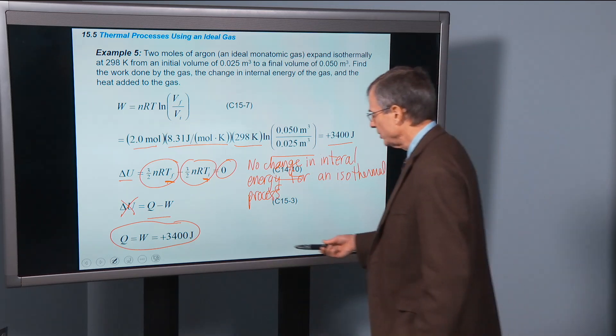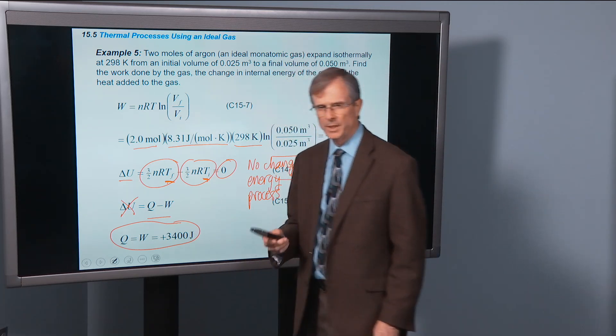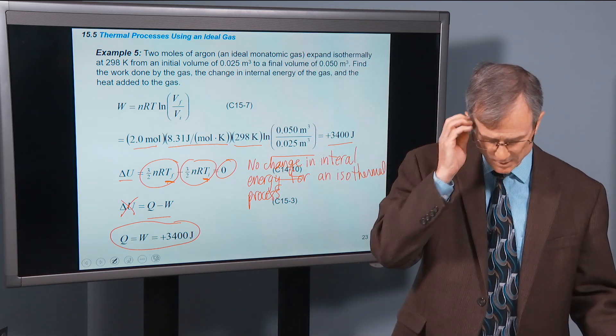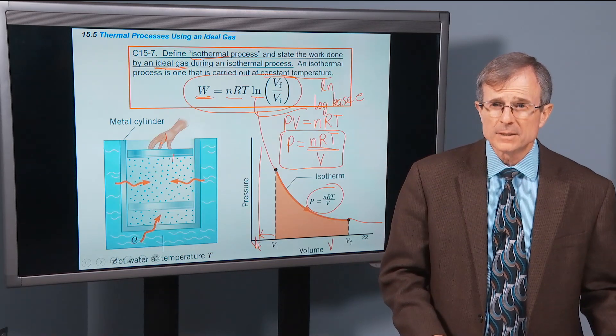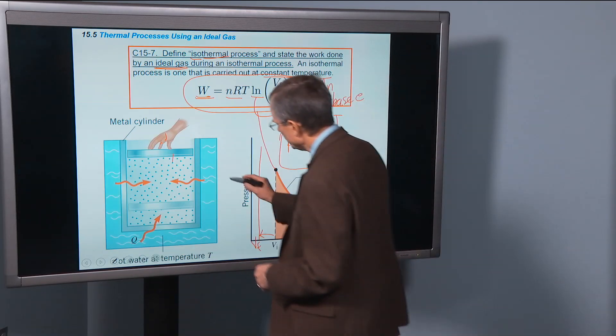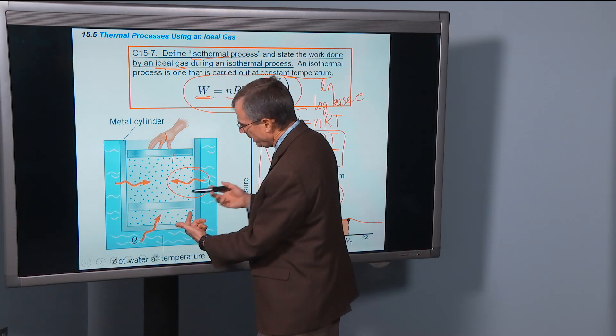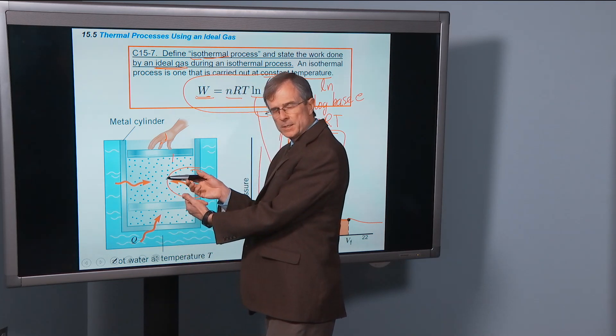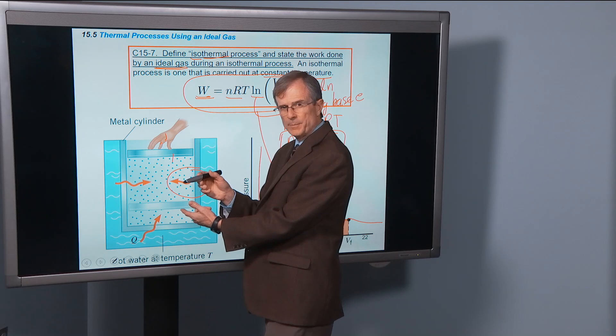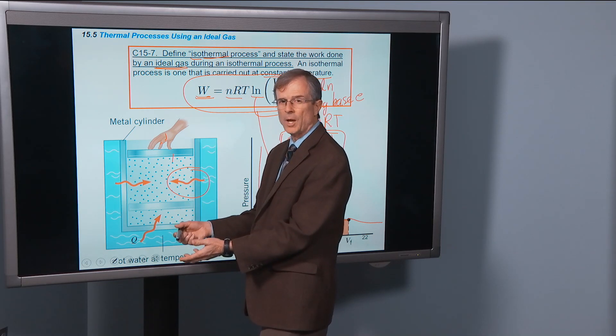And this is the amount of heat that you had to add in order to keep that temperature the same. And so that goes back to this thing here. These red squiggly arrows indicate the heat that's being added to the system, in order to keep the temperature the same, and not let it cool off as it expands.